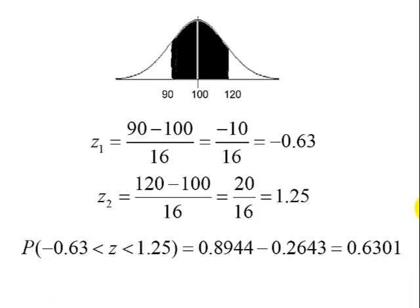We end up with 0.6301. So to answer the question, the percentage of IQ scores between 90 and 120 is about 63%.